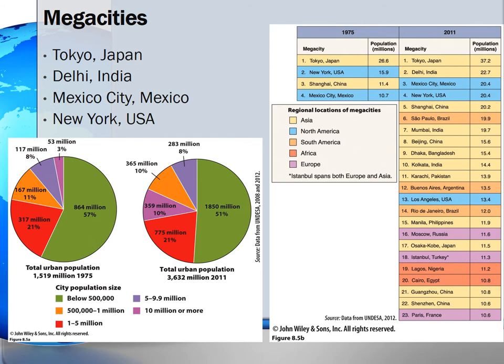Megacities are cities with 10 million or more residents and they grew to this status due to rapid urbanization. The table on the right shows megacities in 1975 and 2011. The number of megacities grew from 4 in 1975 to 23 in 2011, mostly in the developing countries of Asia.